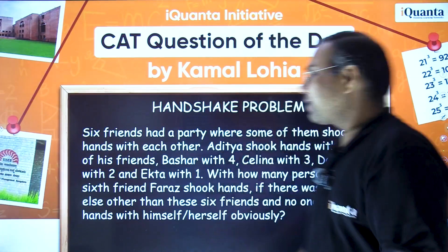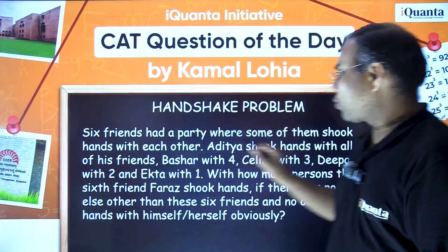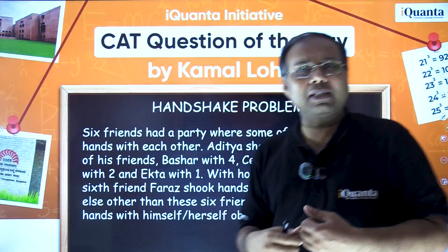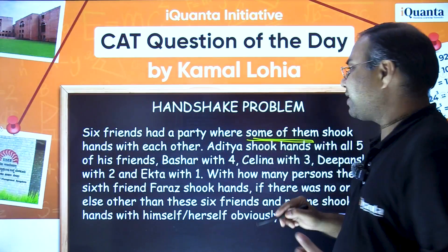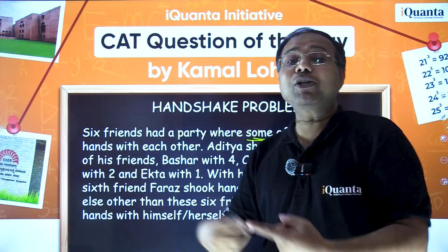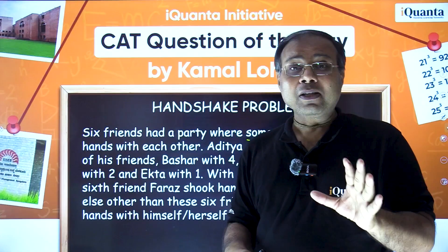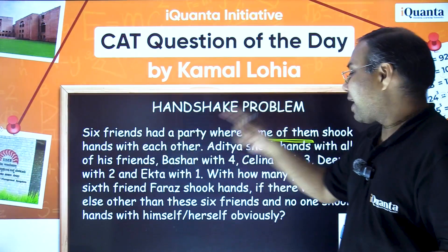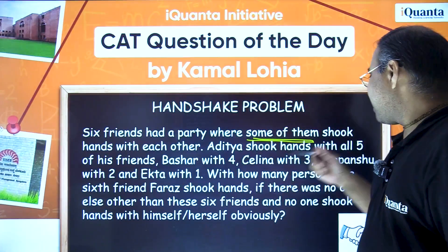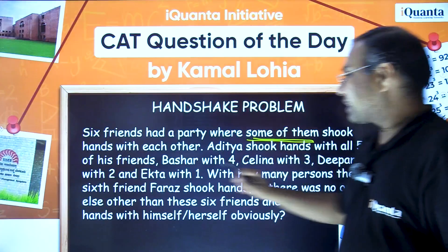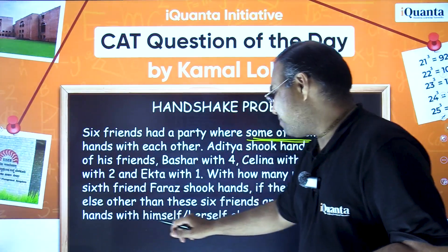Let's solve this question now. It's called the Handshake Problem. Six friends had a party where some of them shook hands with each other — not everyone, just some. The details: Aditya shook hands with all five friends, Basha with four, Selena with three, Dipansha with two, Ekta with one. The question is: with how many persons did the sixth friend Faraz shake hands, given no one shook hands with themselves?